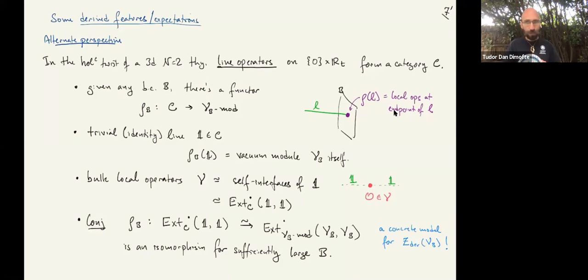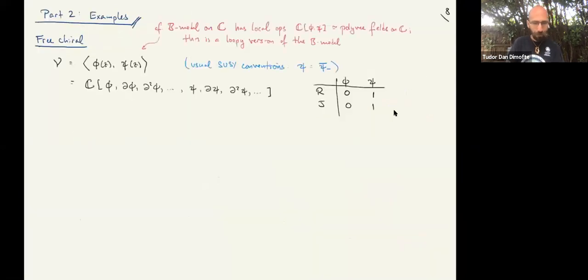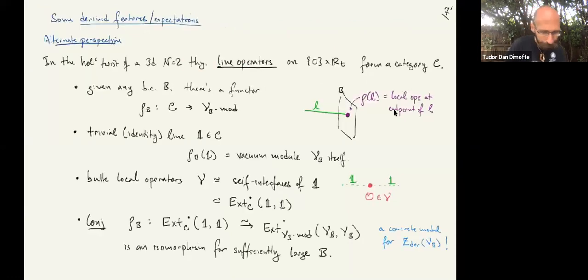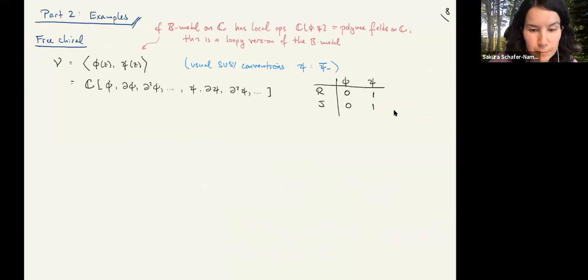The trivial line in the bulk just maps to the vacuum module. Bulk local operators are self-interfaces of the trivial line, computed as an Ext in the category of lines, and then one can turn that Ext into a computation on the boundary. A way to rephrase the conjecture is that given a sufficiently rich boundary condition, the bulk algebra should reappear as self-Exts of the vacuum module. This computation has been done in N=4 boundary algebras by Costello, Creutzig, and Gaiotto, beautifully reproducing bulk monopole operators, and it would be really cool to do this properly in N=2 theories. That's as fancy and as deep as I will go into structure.